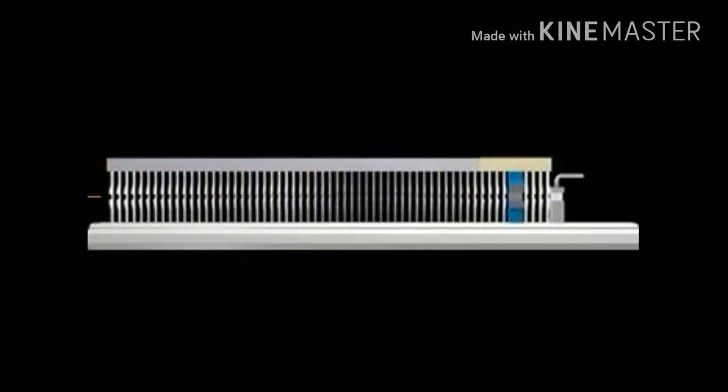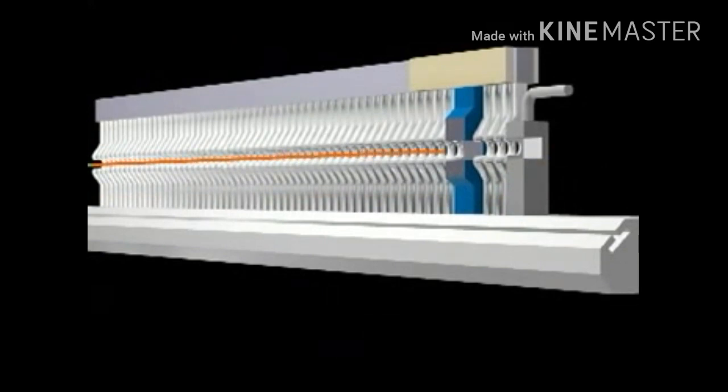When the weft reaches the right side of the reed, additional relay nozzles, or an optional stretch nozzle, secures the weft under tension until the shed closes.